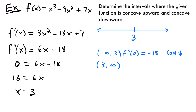Then let's pick a value between 3 and infinity. I'm going to pick 4, so I have f double prime of 4, and that will be equal to plugging 4 into our second derivative. So 4 times 6 is 24, and then 24 minus 18 will be 6. So we'll have positive 6, which is a positive value, which means that our function is concave upward on that interval. So what we find is that from negative infinity to 3, our function is concave downward, and then it switches to concave upward from 3 to positive infinity.